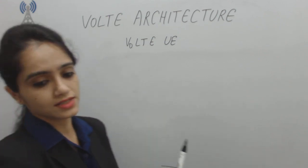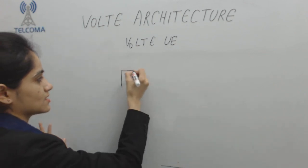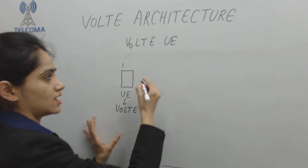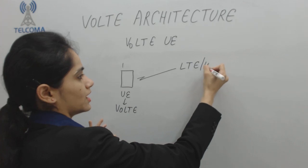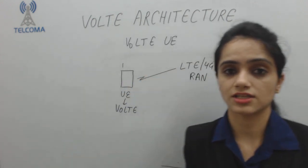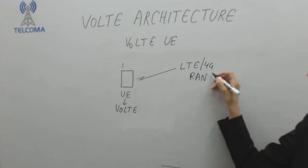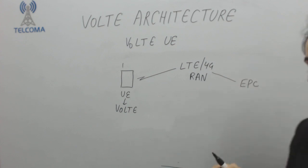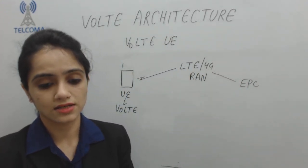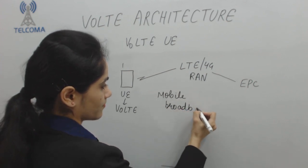The Voice over LTE User Equipment contains the functionality to access the LTE Radio Access Network. For example, a VoLTE-enabled user equipment requires functionalities to access the 4G or LTE radio access network, and also to access the EPC — Evolved Packet Core.